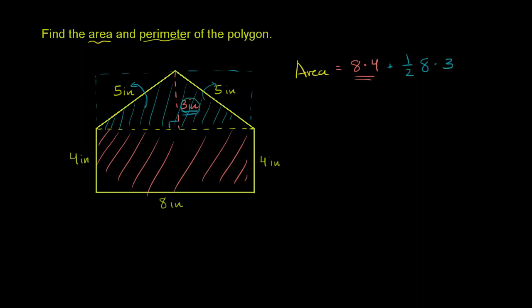So once again, let's go back and calculate it. So this is going to be 32 plus 1 half times 8 is 4. 4 times 3 is 12. And so our area for our shape is going to be 44.